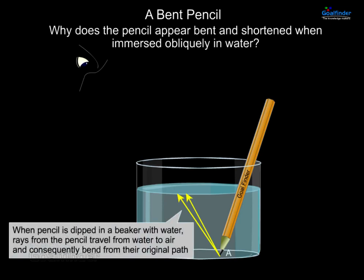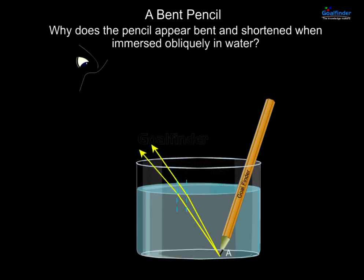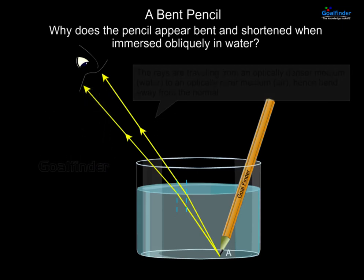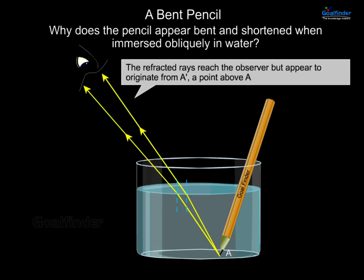When the pencil is dipped in a beaker with water, rays from the pencil travel from water to air and consequently bend from their original path. The rays are travelling from an optically denser medium — water — to an optically rarer medium, which is air. Hence, they bend away from the normal. The refracted rays reach the observer but appear to originate from A dash, a point above A.